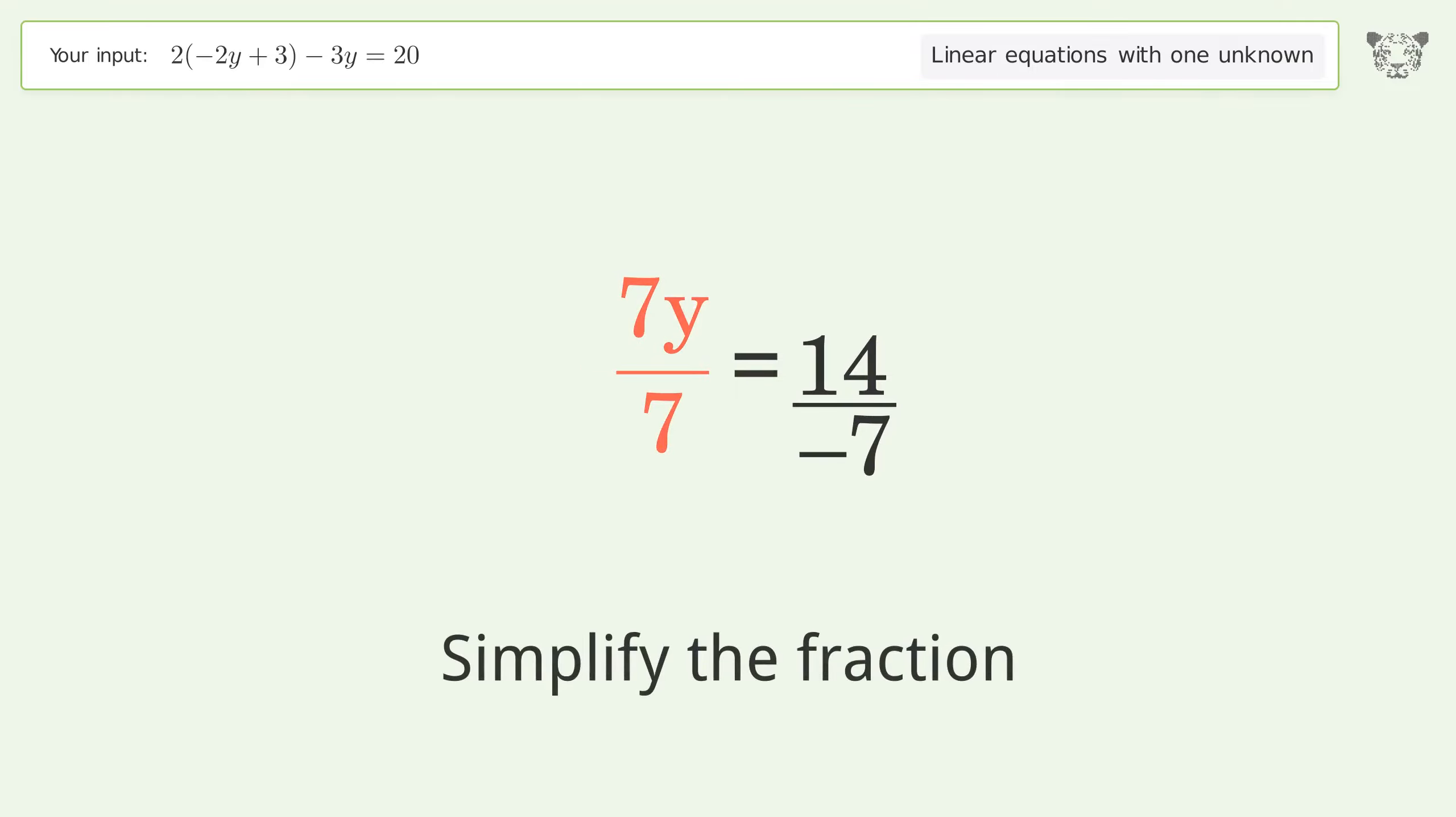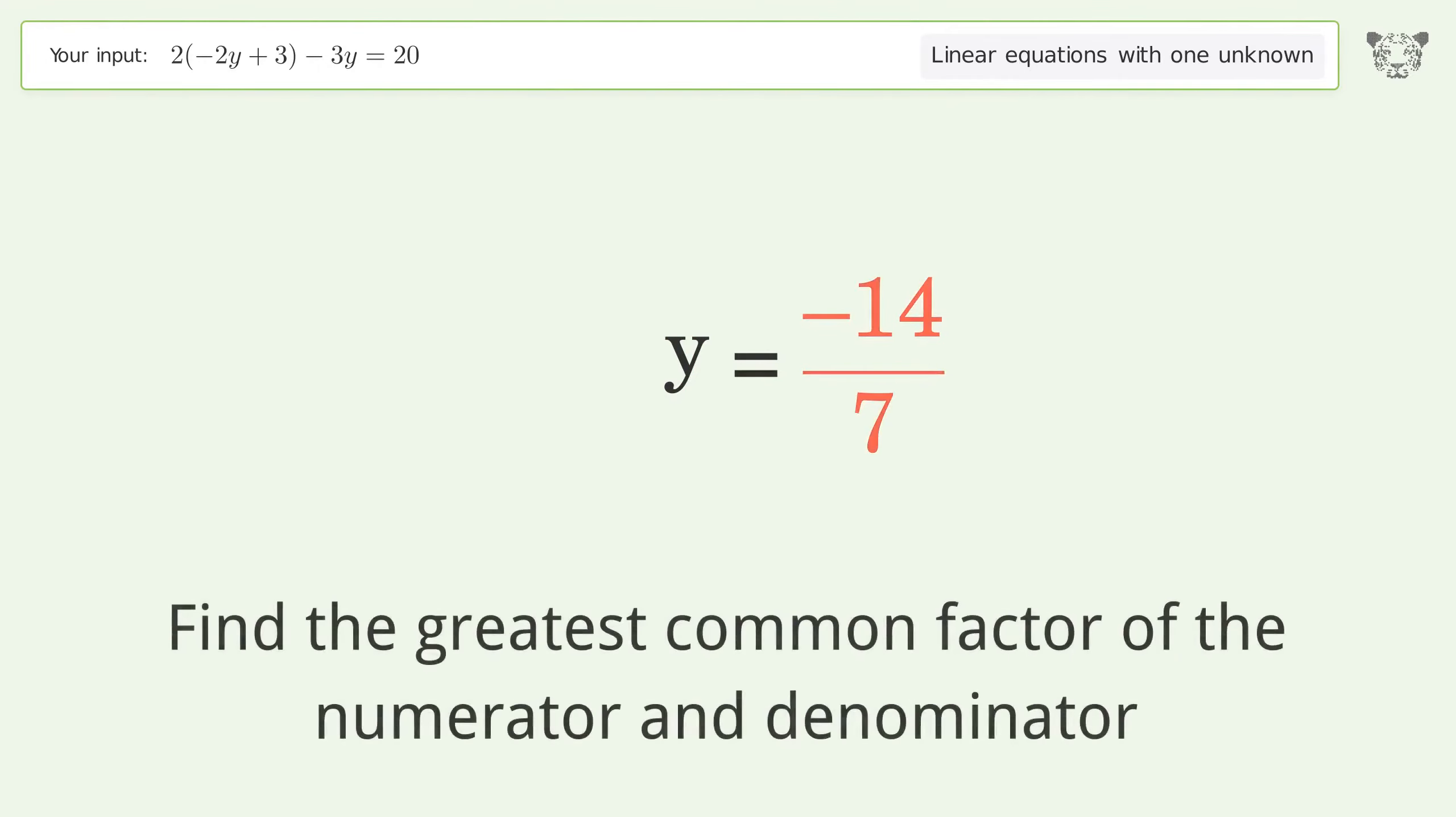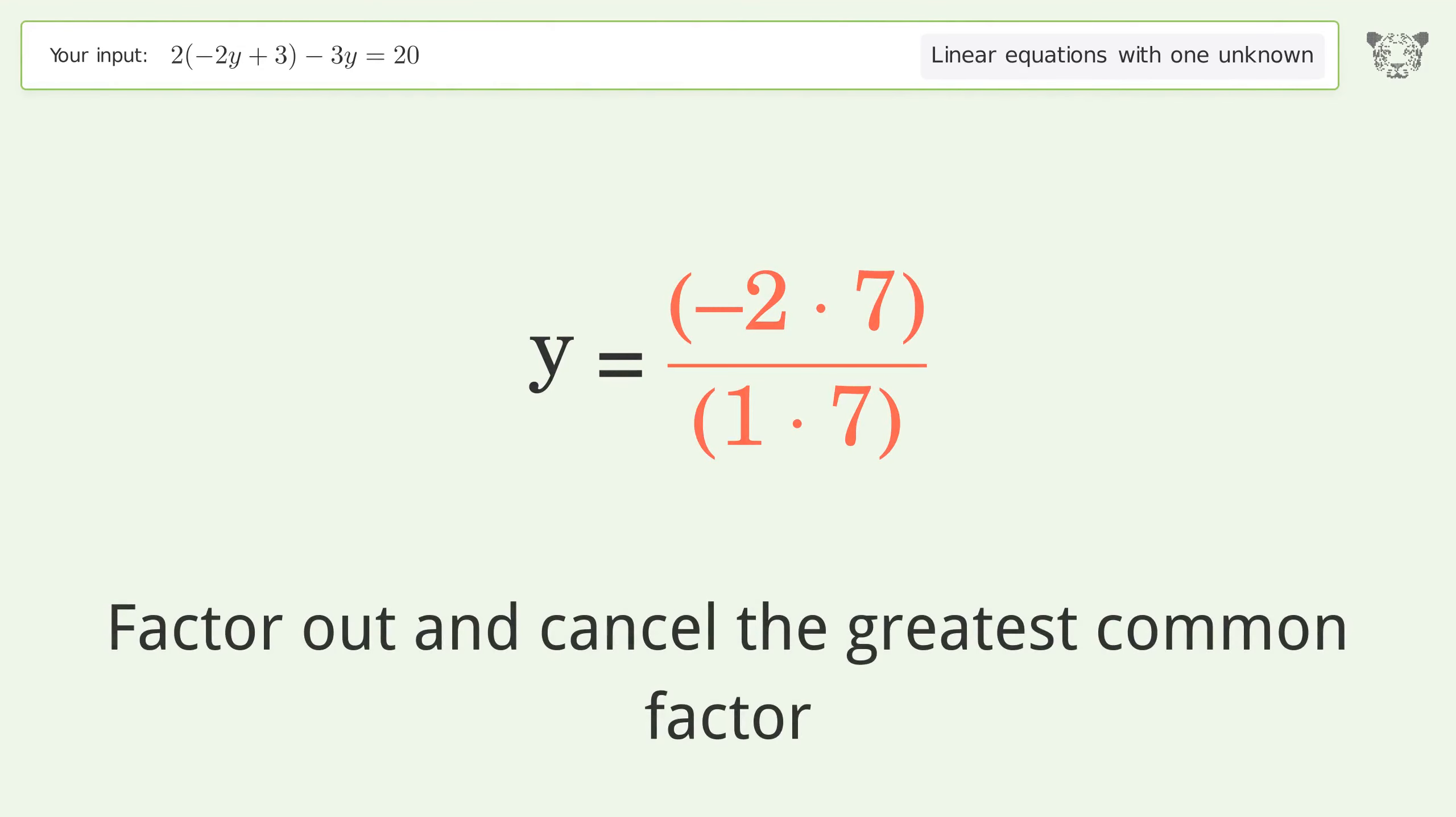Simplify the fraction. Move the negative sign from the denominator to the numerator. Find the greatest common factor of the numerator and denominator. Factor out and cancel the greatest common factor.